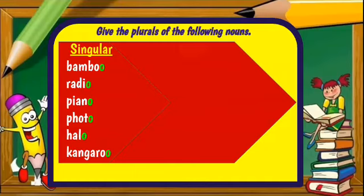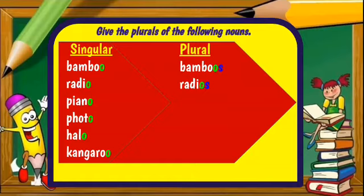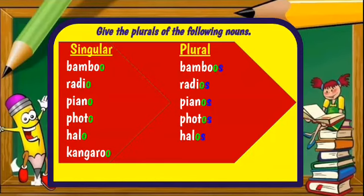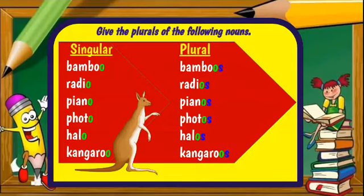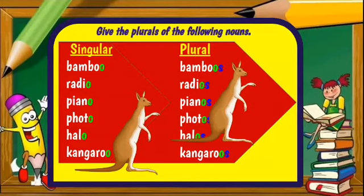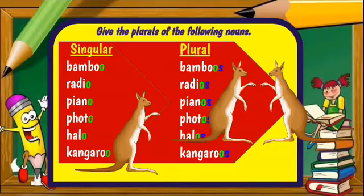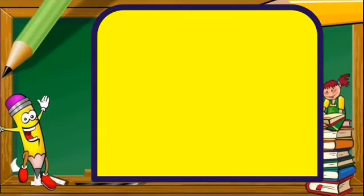So let's get the plural form. Bamboo — plural bamboos, just add S. Radio — plural radios, just add S. Piano — plural pianos, just add S. Photo — plural photos, just add S. Halo — plural halos. And kangaroo — plural kangaroos. These words are the exceptions to the rule where we add only S to form the plural.